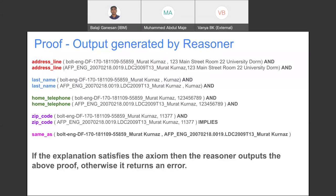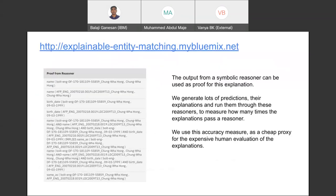So in the demo here, we can see the output from a symbolic reasoner as a proof for the explanation. And so we can use such a mechanism to generate a lot of predictions, their explanations and run them through the reasoners to measure how many times the explainer passes the reasoner. And we can use this accuracy measure as a cheap proxy for the expensive human evaluation of the explanations.